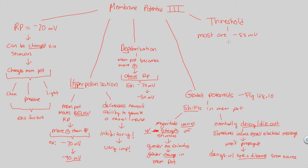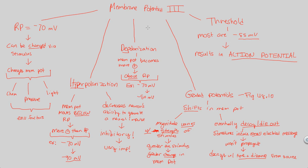What is threshold? It is the point at which — to get from negative 70 to negative 55 millivolts — you must depolarize the membrane. Once you depolarize up to negative 55 millivolts, you have reached threshold. Once threshold is reached, it always results in an action potential — an actual response. The details of the action potential will be covered in the next few flowcharts. That covers membrane potential; now it's time to look at action potential and close out this lecture.